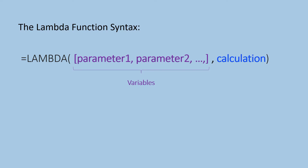The Lambda function takes two arguments. First, parameters, which are the variables or inputs in your formula. In this field, you can have as many parameters as needed. Second is the calculation, which is the place where you enter the formula that Lambda needs to calculate.